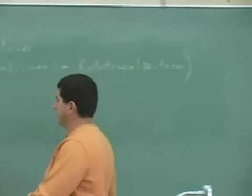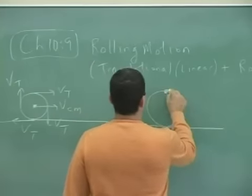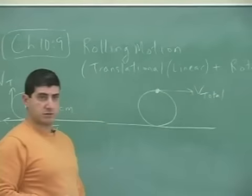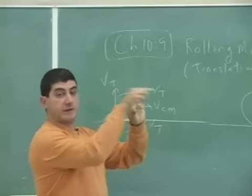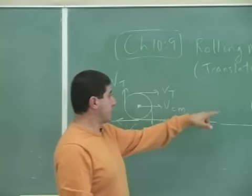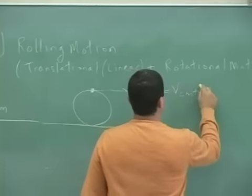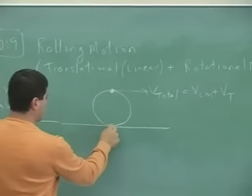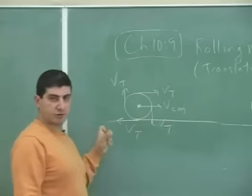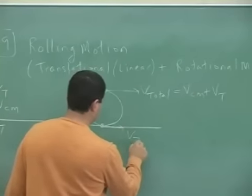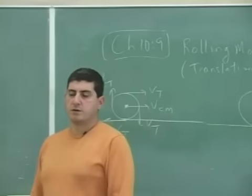Therefore, if I want to know the total velocity at any point: the total velocity at the top point is going to be the vector sum of the tangential and the center of mass velocity. The top point is moving forward because the object is moving forward, plus it's moving forward because it's turning. So the total velocity is V_center_of_mass plus V_tangential. Over here at the bottom, the total velocity is the difference between the two — V_center_of_mass is forward, V_tangential is backward — so V_total equals V_center_of_mass minus V_tangential.